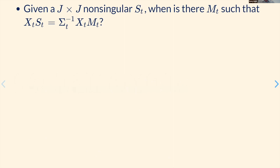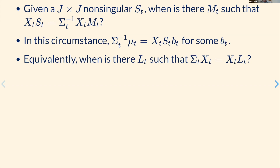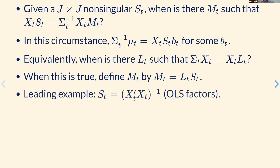Now we look at different approaches to finding factors and ask when they can be written in this form — when the matrix of transformed characteristics spans the frontier. For OLS factors, the main question is: if we post-multiply the characteristics matrix by some J-by-J matrix S — for example, (X-transpose-X)-inverse for OLS factors — when is that equal to sigma-inverse times X times M for some M? When we can solve that for M, the factors span the frontier.